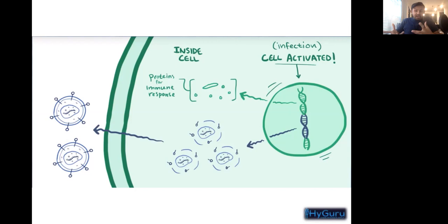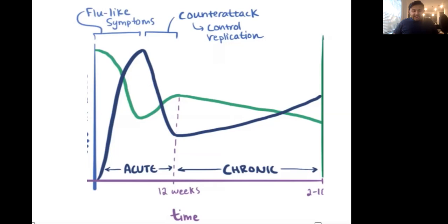What does it do? Some of it makes its own viral proteins; the other part makes proteins for the immune response. Either way, the cell is activated and infected. This slide helps you recognize what's going on in the acute phase — which was what the vignette talked about — and then the chronic phase.